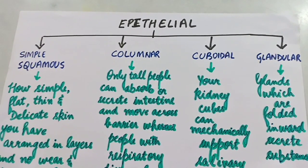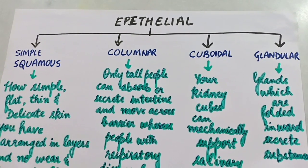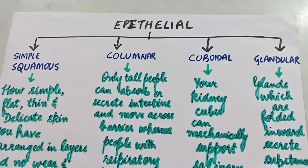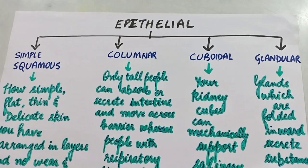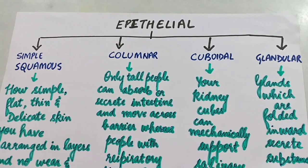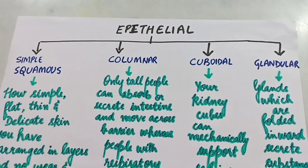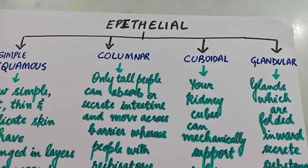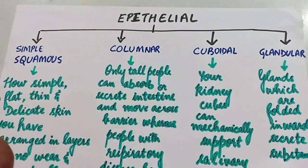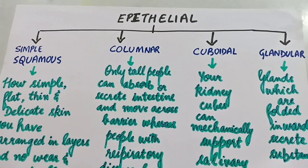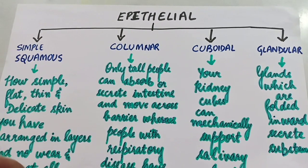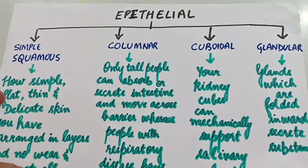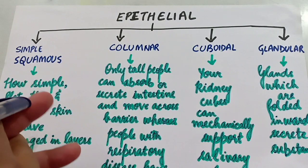Hello friends and welcome back to SDM classes. As promised, I am back here again to tell you the short trick on how to learn the basic characteristics of the four different types of epithelial tissue. In my last video we were discussing the basic characteristics and shortcut for epithelial tissue, which is one kind of animal tissue. In this particular video we are going to learn quickly the four different types of epithelial tissue.